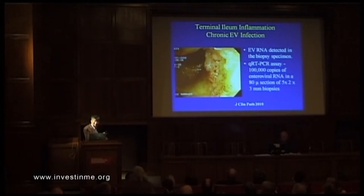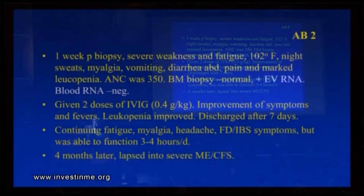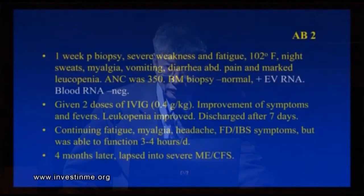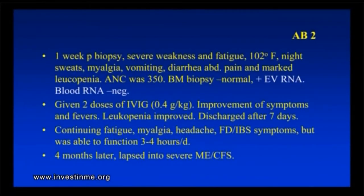There were at least 50 to 100 million viruses in the swelling. After this biopsy, a week later, she developed severe weakness and fatigue, 102-degree fevers, drenching night sweats, body aches, vomiting, diarrhea, abdominal pain, and marked leukopenia. The white blood cell count was extremely low, with an absolute neutrophil count of 350 — normally it should be about 2,000 to 7,000. We thought she had leukemia. She was hospitalized. We did a bone marrow biopsy, which was read as normal, but we did detect enterovirus RNA in the bone marrow. She was given two doses of IVIG — intravenous immunoglobulin — and had improvement of her symptoms and fevers. The leukopenia improved. She was discharged after seven days.